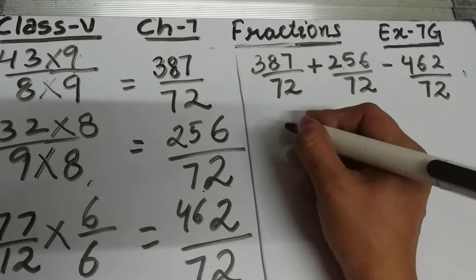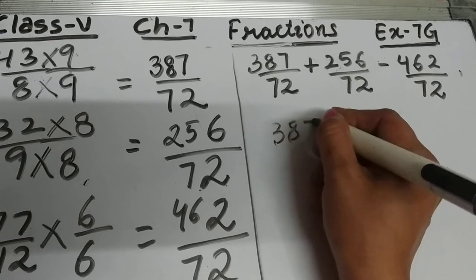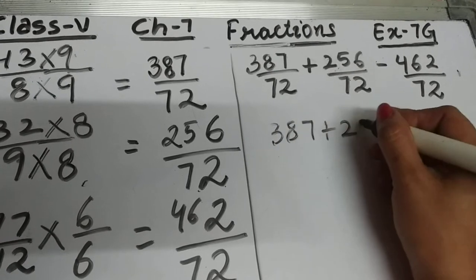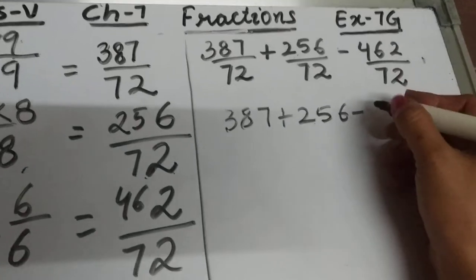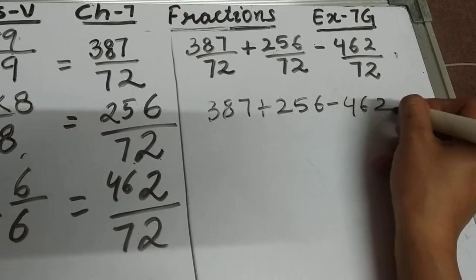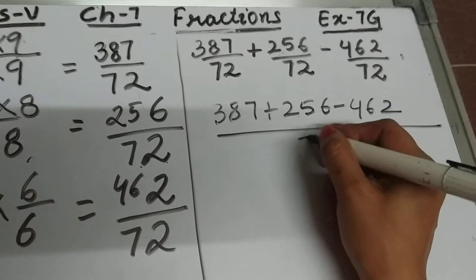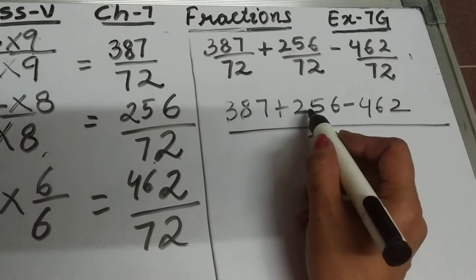Now start simplifying: 387 + 256 - 462, all over 72. Add these two numbers.